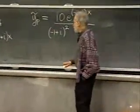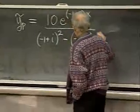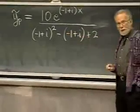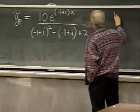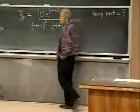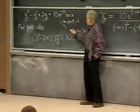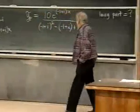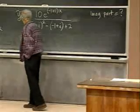So it's (−1+i)² − (−1+i) + 2 in the denominator. I'm substituting α = −1+i for D in the polynomial. Let's compute the denominator. (−1+i)² = 1 − 2i − 1 = −2i. Then −(−1+i) = +1−i. Plus 2. So real part: 0 + 1 + 2 = 3. Imaginary part: −2i − i = −3i. So the denominator is 3 − 3i.